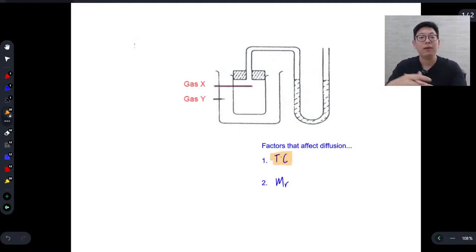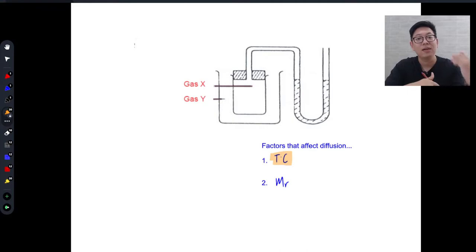Now for temperature, the idea is simple. The higher the temperature, the more kinetic energy the particles will have, the faster the rate of diffusion. The second one is relative molecular mass. The lower the relative molecular mass, the faster the particles will diffuse. So the lower the MR, the higher the rate of diffusion.